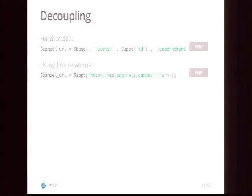For decoupling: a hard-coded way to construct a cancel URI is to analyze the URI structure as a human and write a rule for how it's constructed. The problem is if they ever change their URI structure — which is reasonably likely — your application breaks. If you use the link relation instead, you don't depend on the URI structure. You're just accessing the URI itself. There's also URI templating where the rules for creating the URI are part of your message.